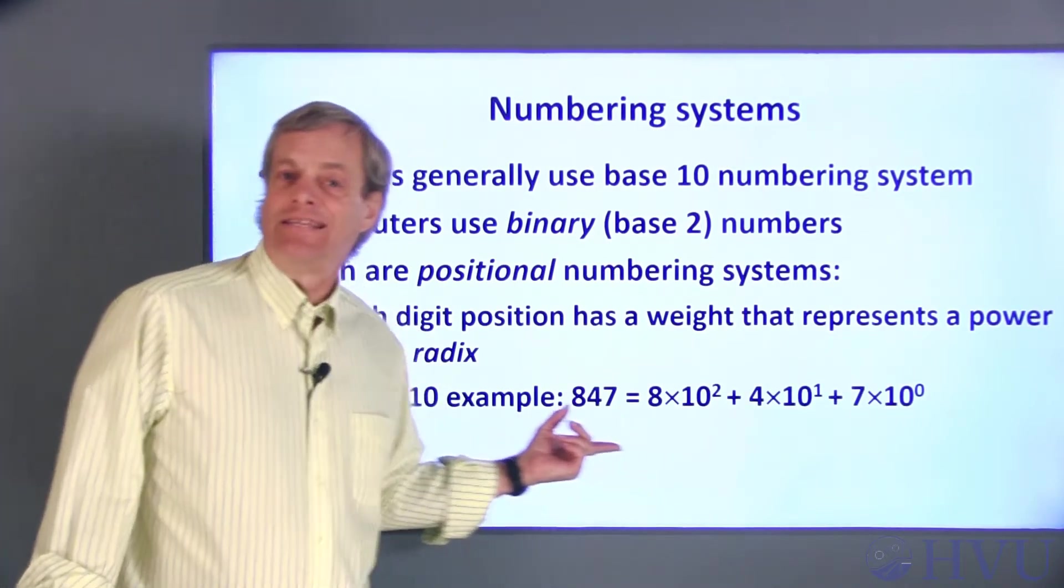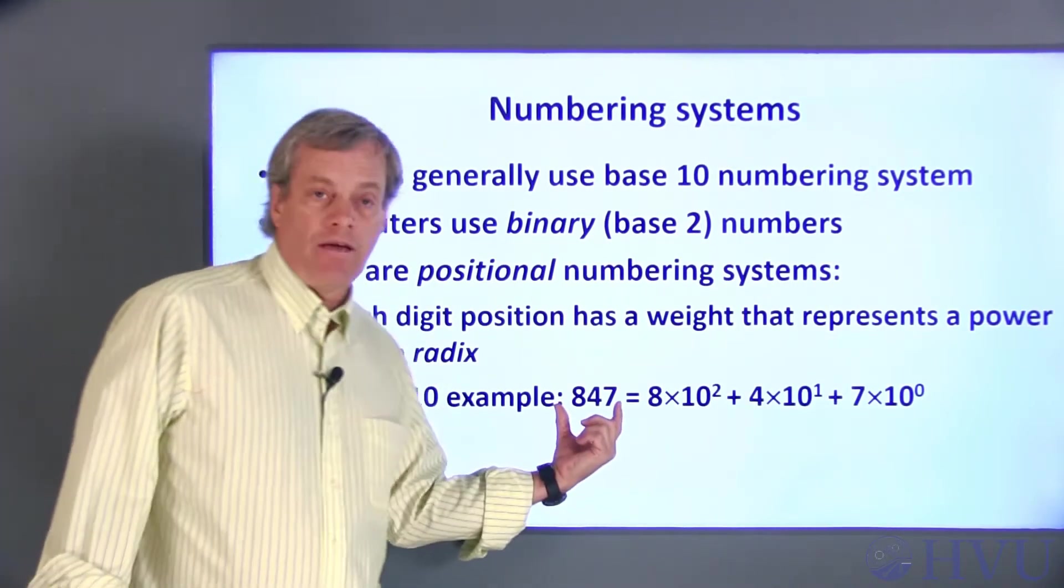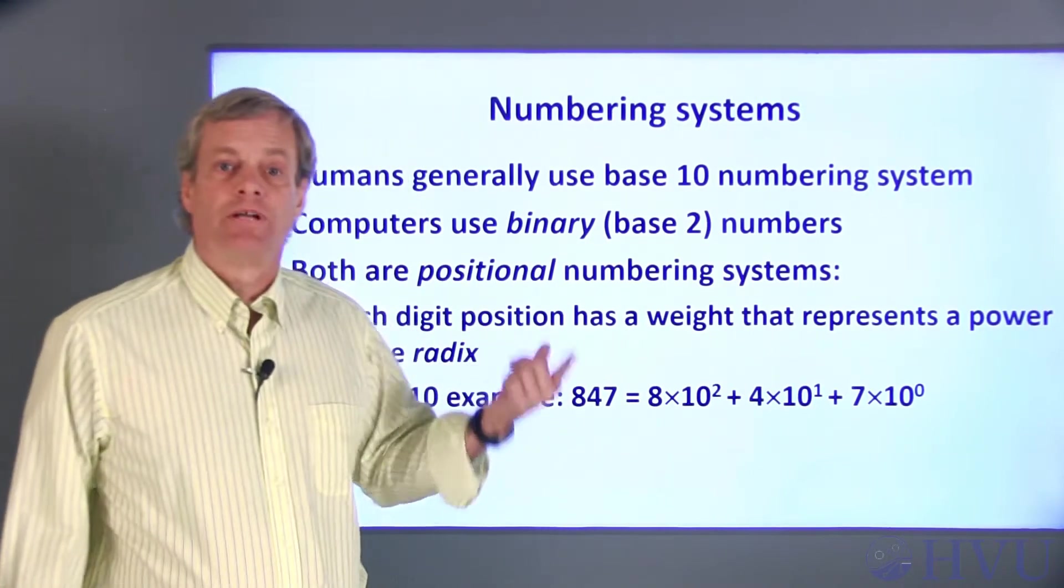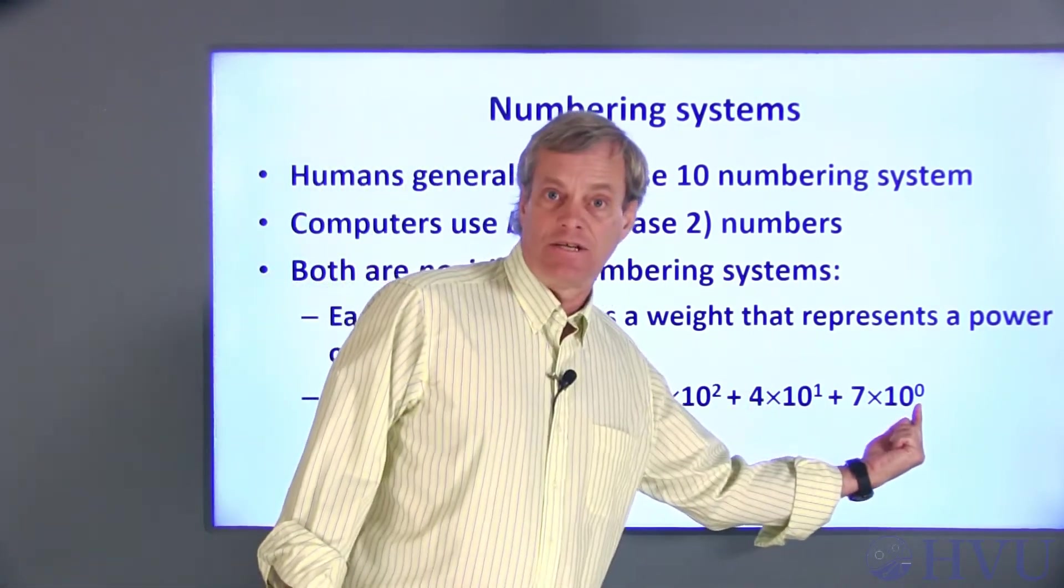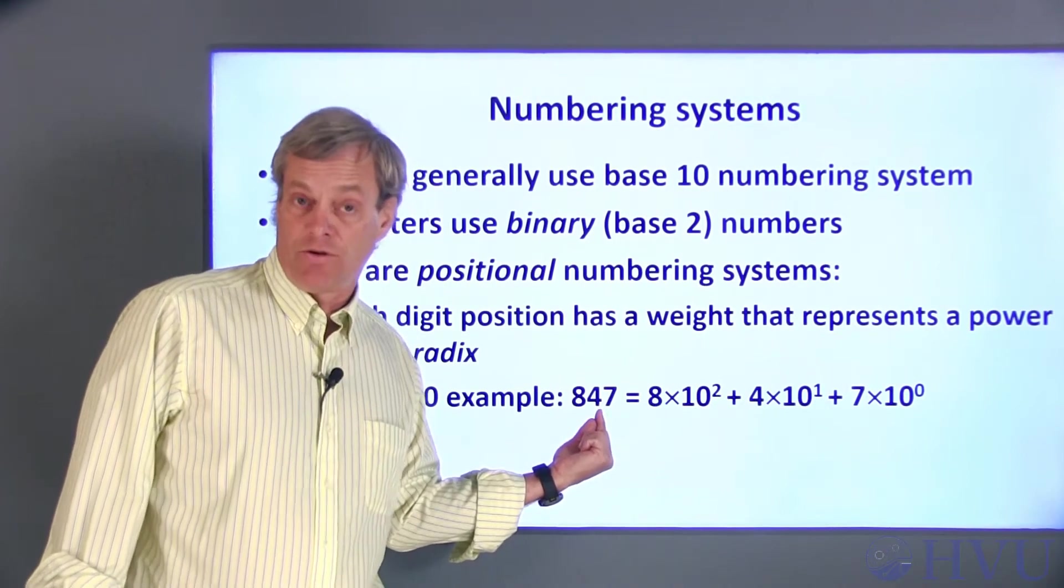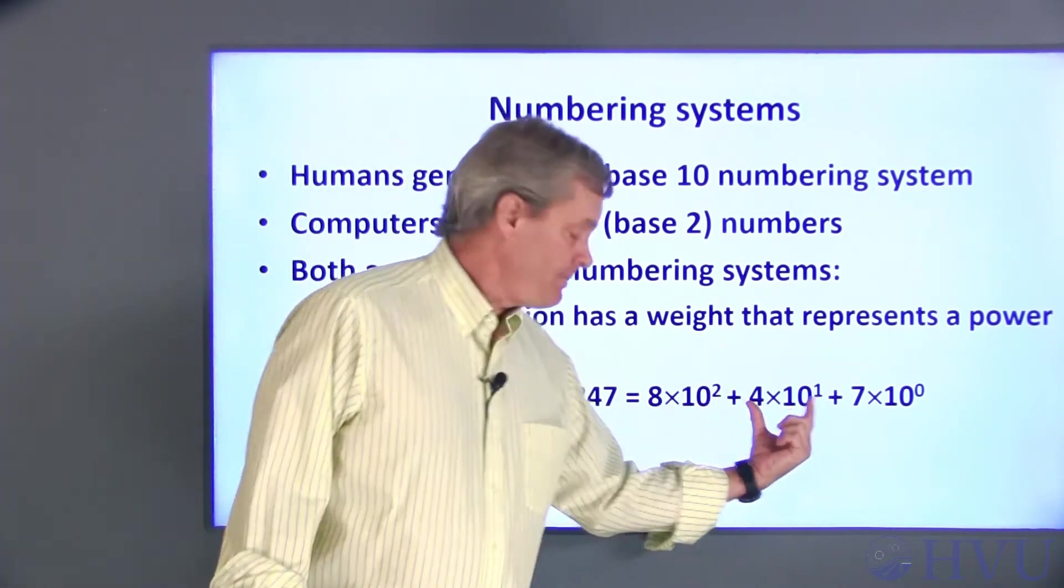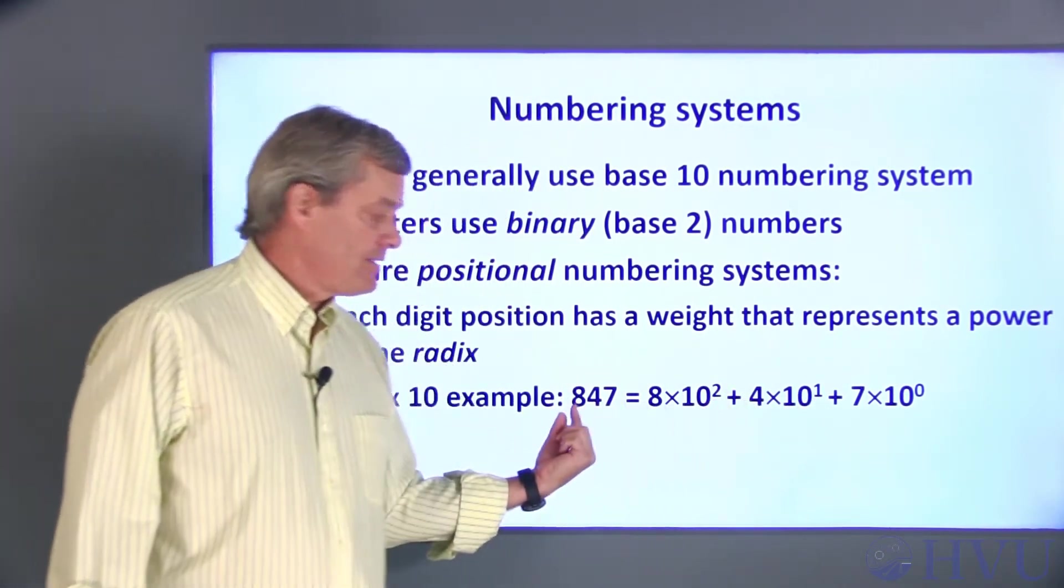Radix 10 numbers are interpreted as in this example. The number 847 is interpreted as 7 times 10 to the zeroth, since the last position in the number is the zeroth position, plus 4 times 10 to the first, plus 8 times 10 squared.